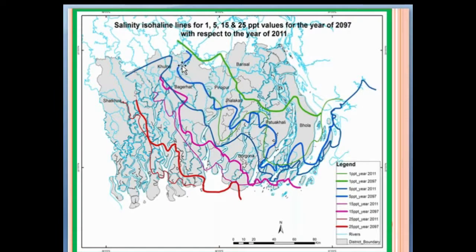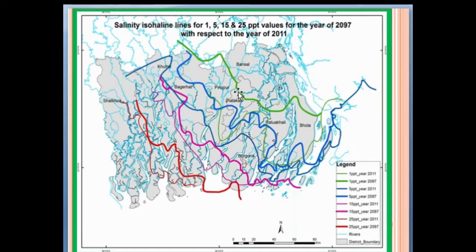Here you can see the isohalines of an aquatic system, showing the various districts of an estuary. The thick lines show the year 2097, while the thin lines show the isohalines for 2011. This is a comparison between 2011 and 2097, showing salinity isohaline lines for 1 PPT, 5 PPT, 15 PPT, and 25 PPT values.